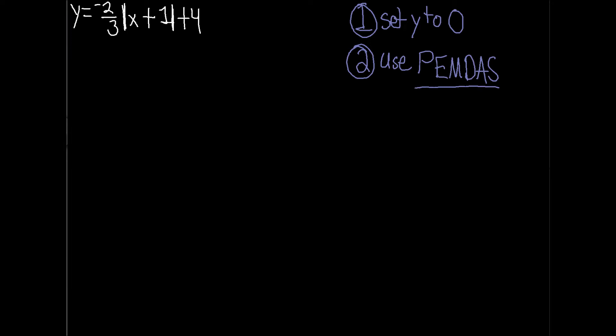SADMEP, or S-A-D-M-E-P: subtraction, addition, division, multiplication, exponents, parentheses, is the order of operations for finding x when you know y.